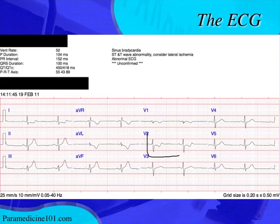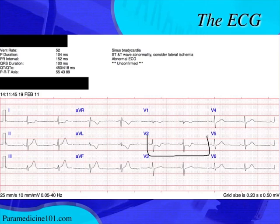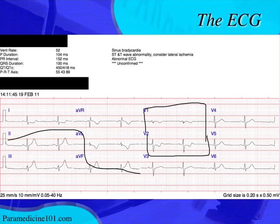What else is on the ECG? V2 looks changed, but it's not a lateral lead and it's certainly not reciprocal to the inferior leads. I want you to imagine the posterior wall being elevated when you see ST depression in V1 and V2, especially in the accompaniment of an inferior wall MI. This change in V2 — and sometimes all the way to V4 — with ST depression and T-wave inversion, the T wave almost biphasic and starting to invert, is indicative of a posterior wall infarct. It's actually a reciprocal change of the posterior wall. It's not always definitively posterior, so you can do a posterior 12-lead to confirm.